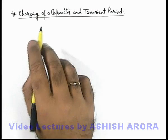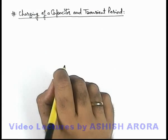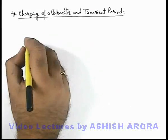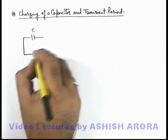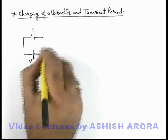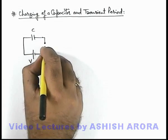Let us discuss the charging of a capacitor and its transient period. We are given a capacitor of capacitance C connected across a battery of EMF V along with a switch.